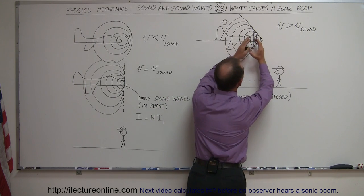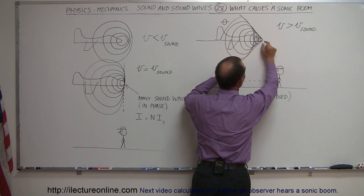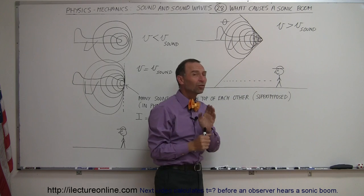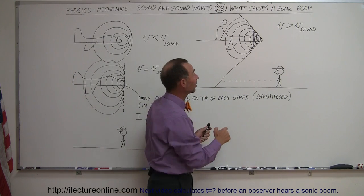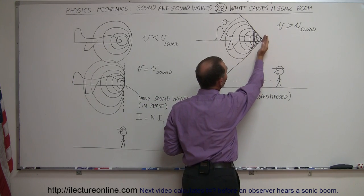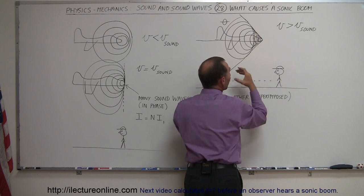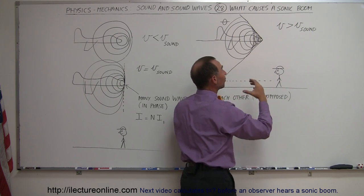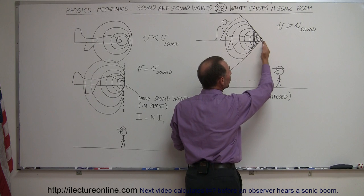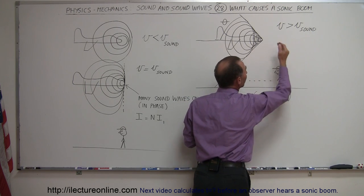So what happens is, it makes a sound wave, the wave goes in all directions, the plane continues flying, makes another sound wave, but notice the plane is flying faster than the speed of sound. So when it makes the next sound wave, it's already farther than the wave that's expanding out in spherical direction outward. So the new waves are being produced further and further and further along, but they're very very close together.